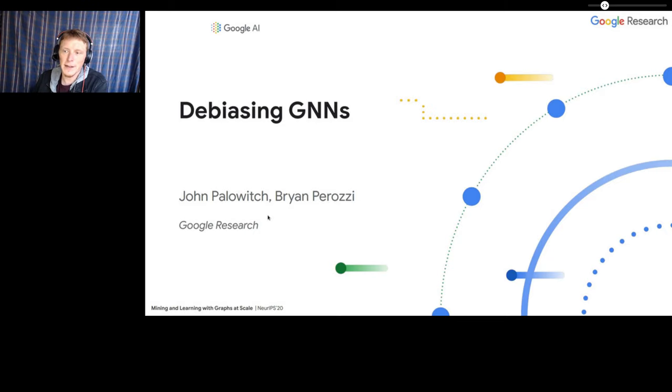Hello, everyone. My name is John Palowicz. This talk will be about debiasing GNNs, and the original work I'll talk about is in collaboration with Brian Parozzi. I also want to mention this is my first time doing a formal prerecorded talk. It's a pretty weird format for me. I feel like I give much better talks when I can see and interact with the audience in real time. So I hope all of you, future you, are enjoying yourselves at NeurIPS, and in particular at this NeurIPS expo. Let's see how this goes.